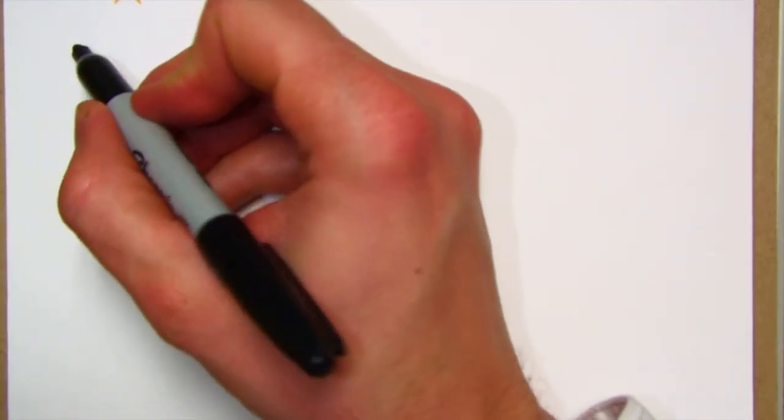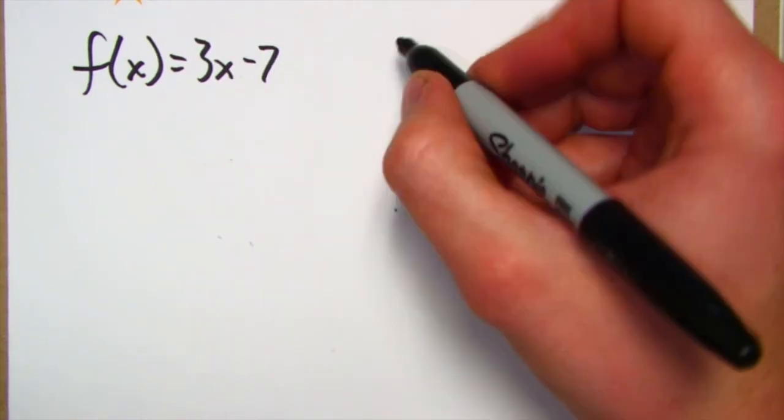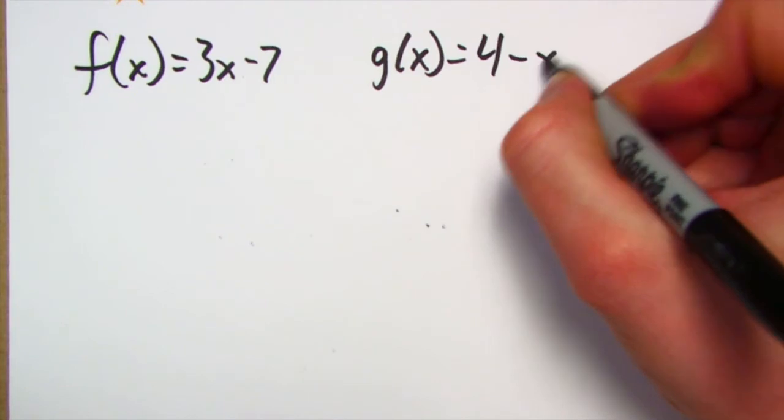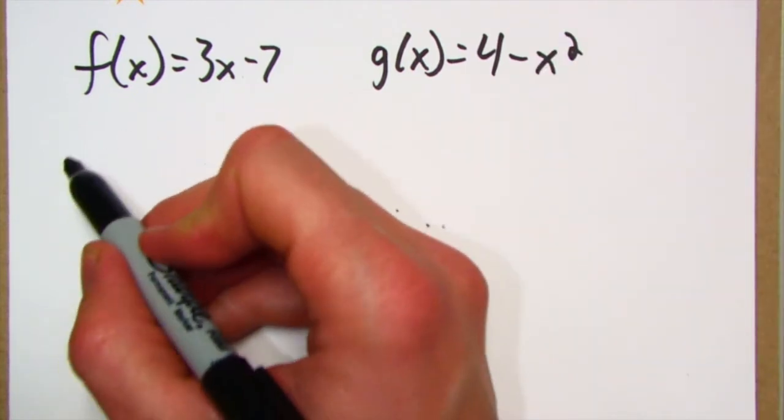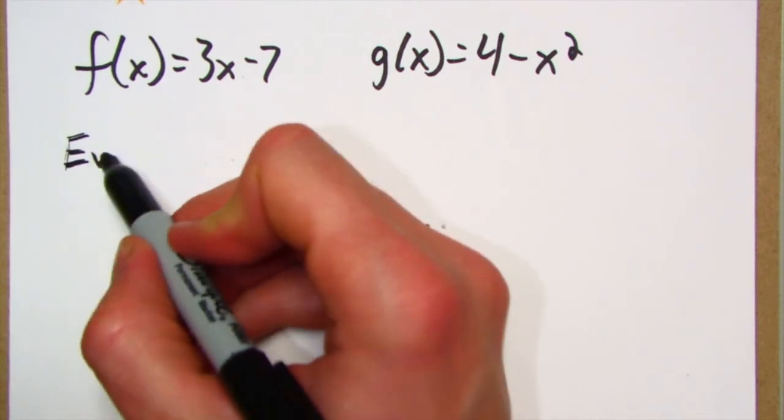Okay, now we're going to try something even harder, even more tricky, but not impossible. All right, here we go. f of x, just as a reminder, f of x is 3x minus 7 and g of x is 4 minus x squared. All right, let's evaluate...